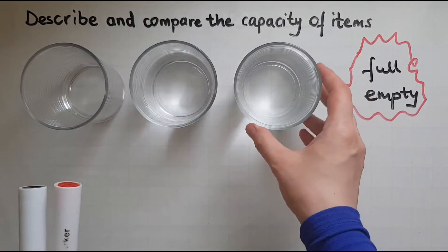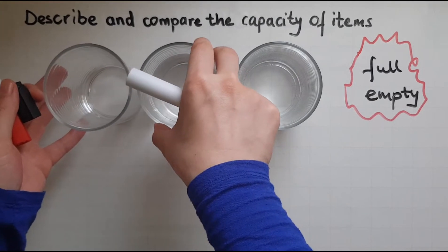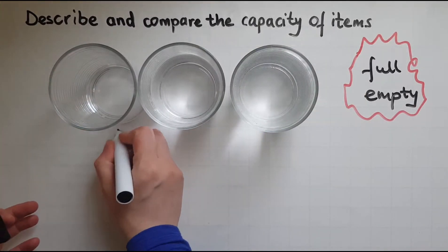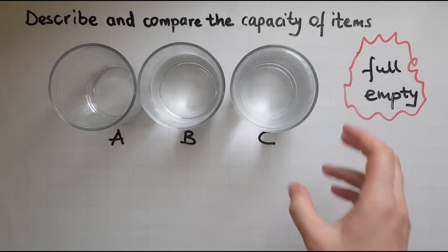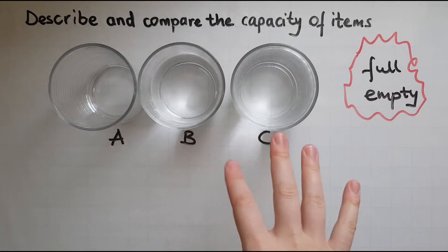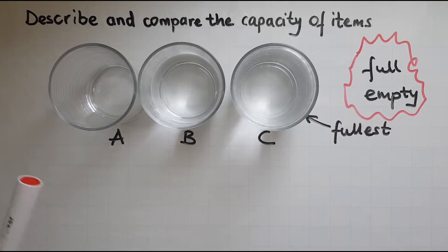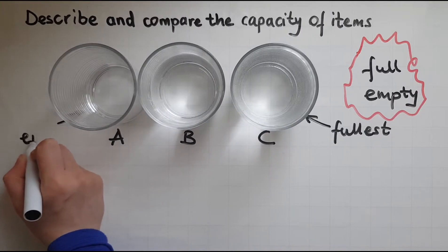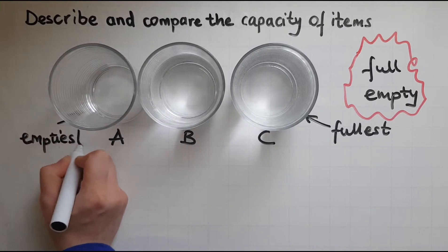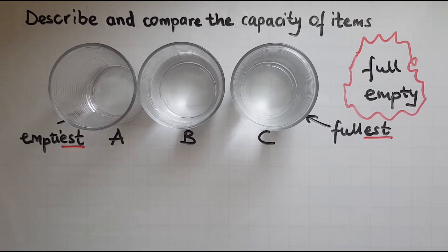So I'll label these glasses to help me compare them: A, B, and C. Out of these all, glass C is the fullest, whereas glass A is the emptiest. So we're using -est at the end: emptiest, fullest.